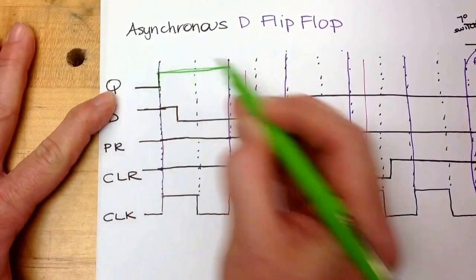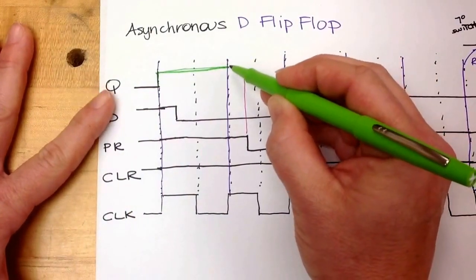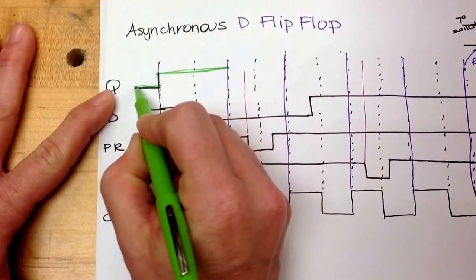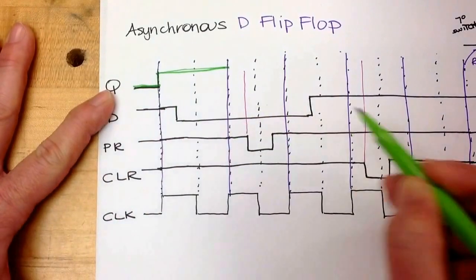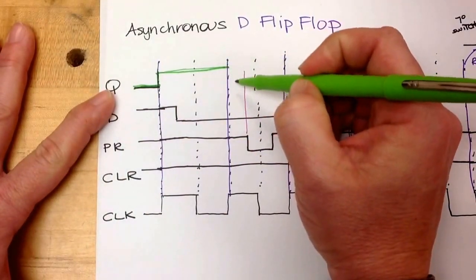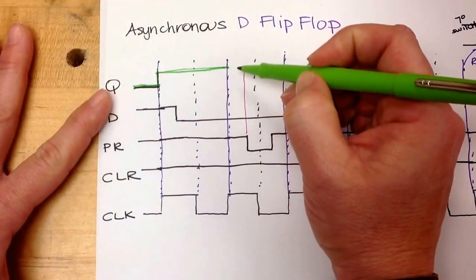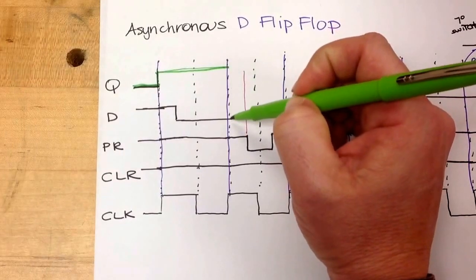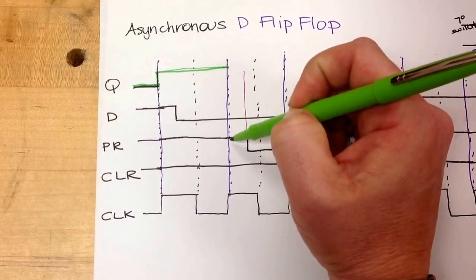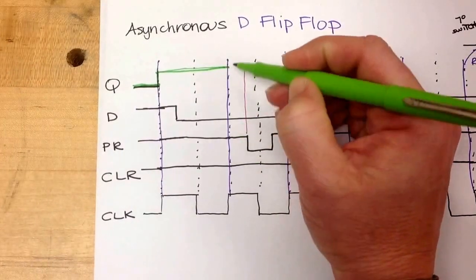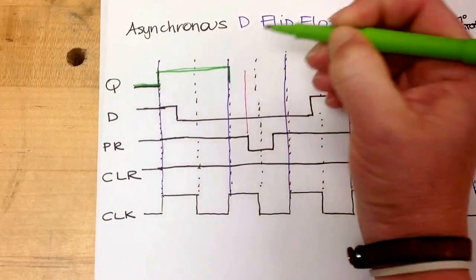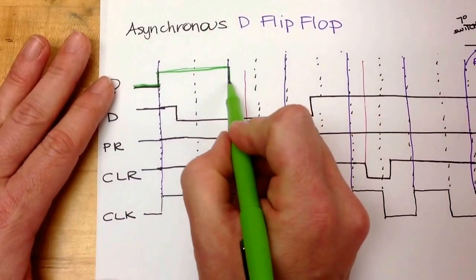I get to the next edge of the clock and I look back to see what is happening. D has gone to zero, so Q would go to zero — and it's going to go down and now it's going to travel across.